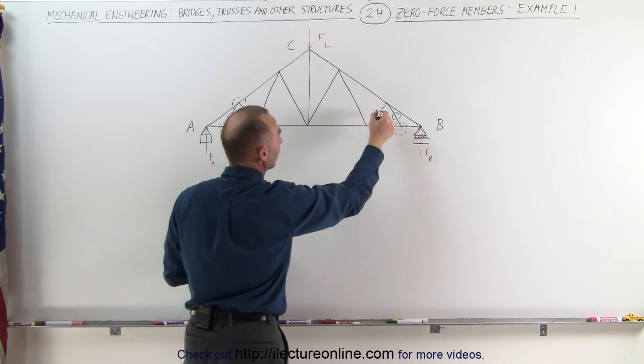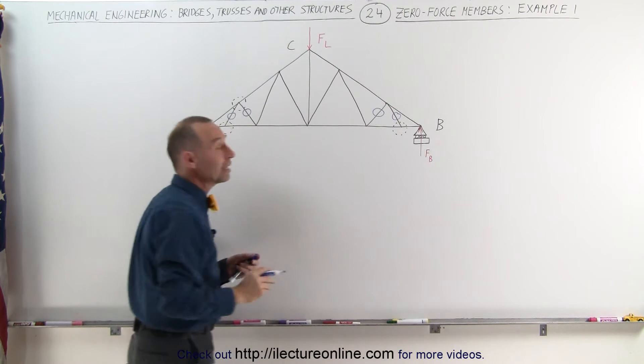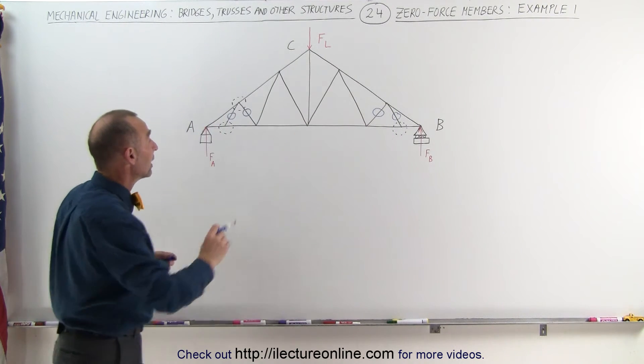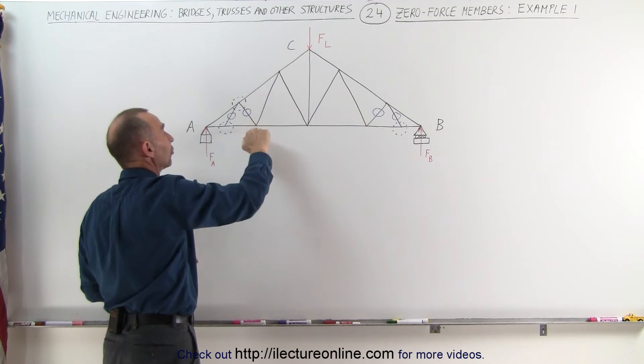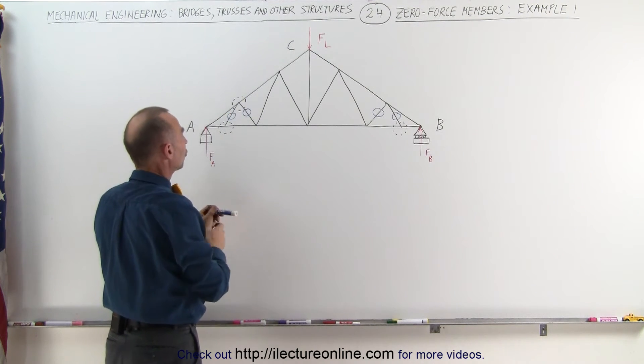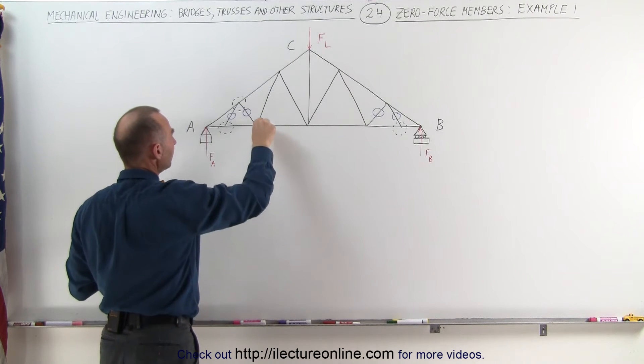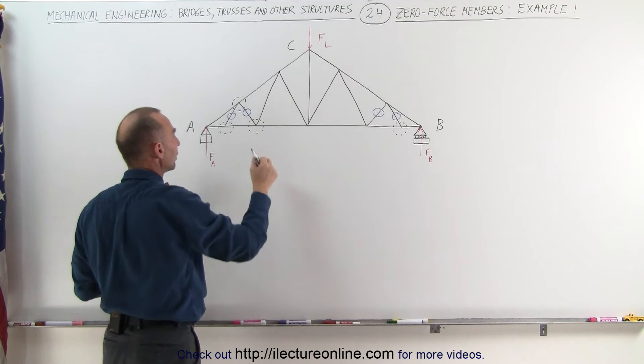and because of symmetry, this member must also be a zero force member. And now we can continue. Again, you can assume that this member is not there because it's not contributing any force to this joint. We now look at this joint right here. And again, we have a joint with only three members.